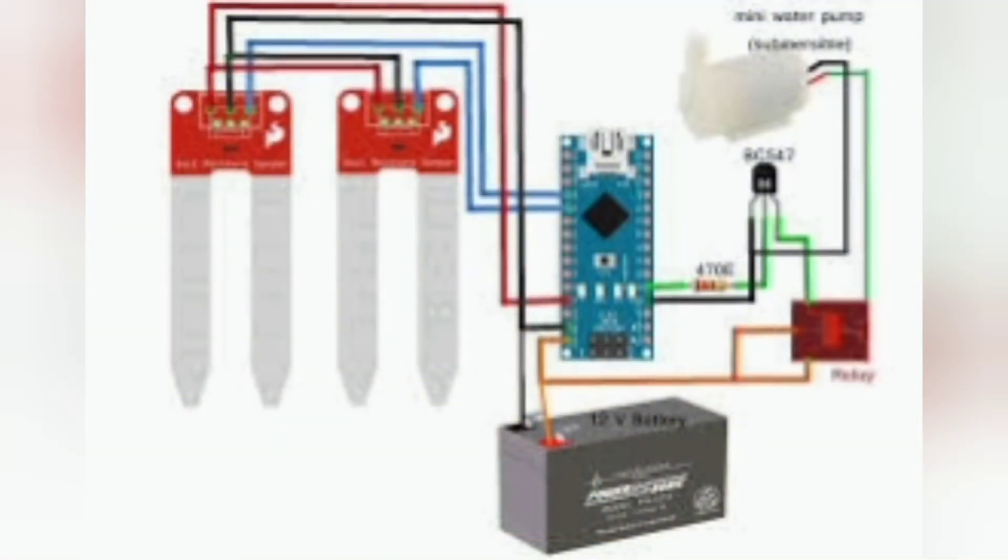This is our project which includes a moisture sensor, an Arduino with coding, a water pump, a relay, a battery, and a resistor. The coding allows us to know how much water is needed and how the system is working.